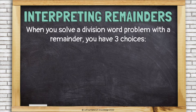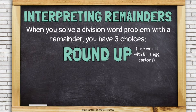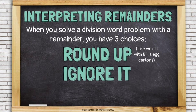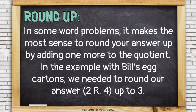When you solve a division word problem with a remainder, you have 3 choices. You can round up, like we did with Bill's egg cartons. You can ignore the remainder, or you can share it. Let's look at examples of each.